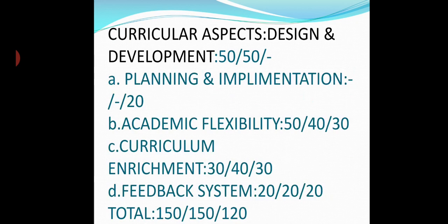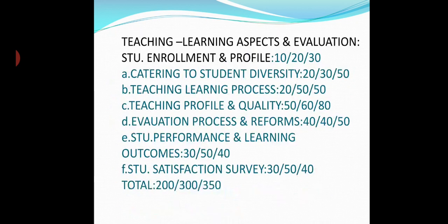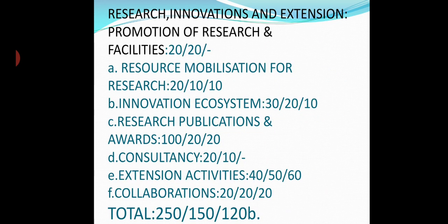Going to the first criterion, it is further subdivided as planning of the syllabus, academic flexibility, and enrichment feedback. Going to the second criterion, it is further subdivided as diversity, learning process, quality, evaluation process, reforms, learning outcomes, and student satisfaction survey. Going to the third criterion, it is further divided as resource mobilization, innovation system, publications, consultancies, extension activities, participation, and collaborations.